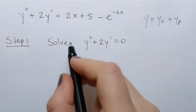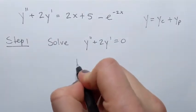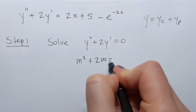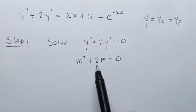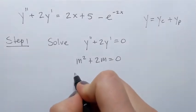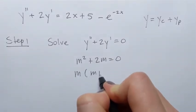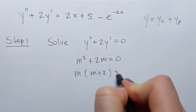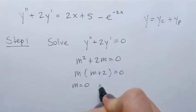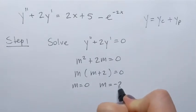To solve that, we obtain the characteristic equation m squared plus 2m equals 0. This is a quadratic equation that I can solve by factoring: m times m plus 2 equals 0. So from here, m equals 0 and m equals negative 2.